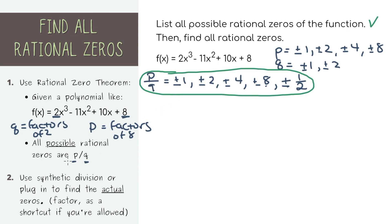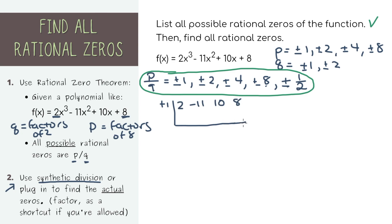In order to find the ones that are actual zeros of the function, we can use two different methods. I'm first going to show you synthetic division. You pick any of these numbers and test it out to see if it is a zero. I'm first going to pick positive 1. Dividing using synthetic division, we bring down the 2, and 2 times 1 is 2, giving a remainder of 9, which means positive 1 is not a zero of this function.